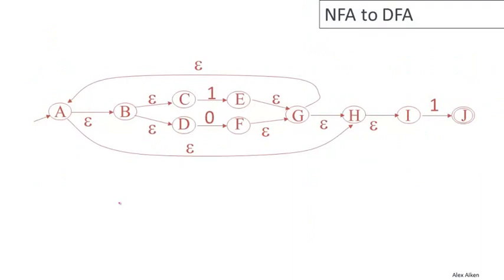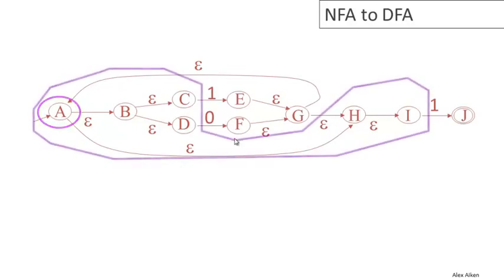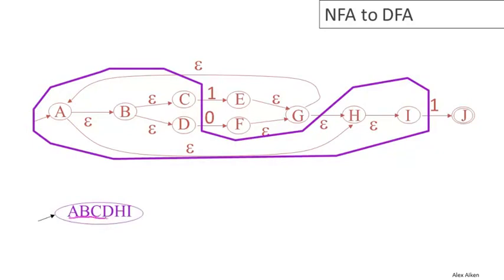Let's work through an example of constructing a deterministic machine from a non-deterministic machine. Here's the NFA we built in the last video. We're going to enumerate only the states we actually need rather than all subsets. We begin with the start state of the NFA, state A, and the start state of the DFA is the epsilon closure of that state, which corresponds to the purple set: {A, B, C, D, H, I}. Now we have to work out what happens on each possible input value — the alphabet is {0, 1}, so we need two transitions out of this state.